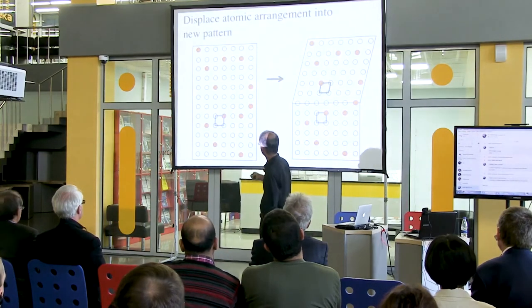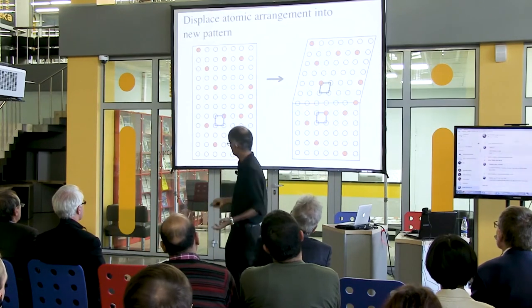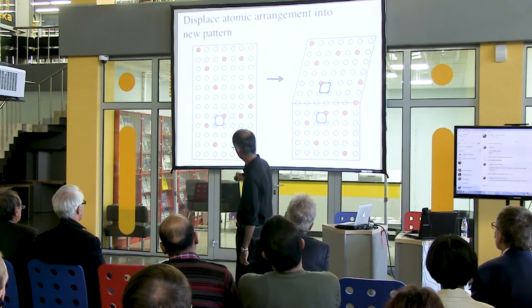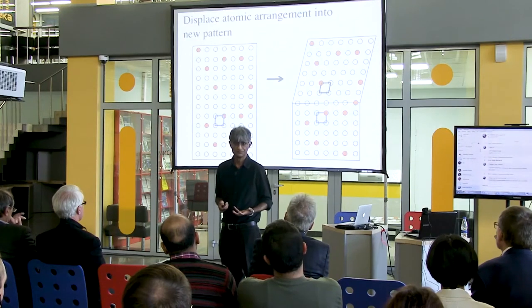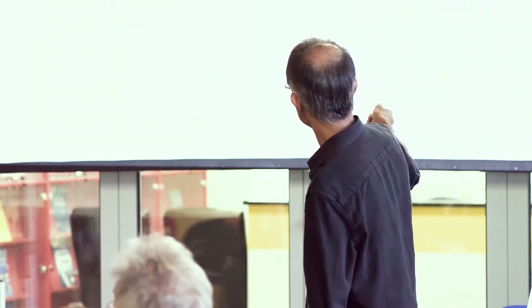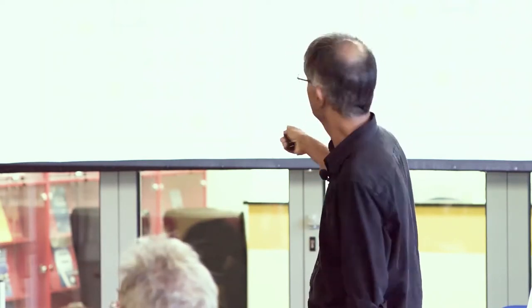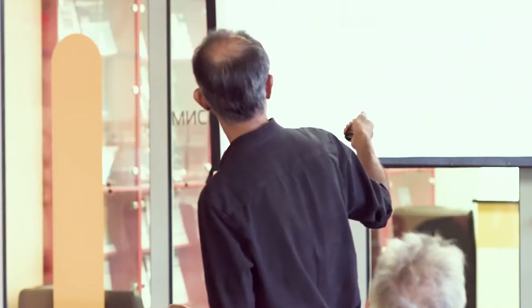Supposing that you have austenite here and it contains red atoms and white atoms. This is the unit cell of the crystal structure. And you want to change that unit cell without any diffusion, because you are conducting transformations at a low temperature where atoms are not mobile. Then you can do that by physical deformation. Here we have changed the shape of the unit cell, but the chemical composition is exactly the same. And the neighbors of all these atoms are exactly the same.